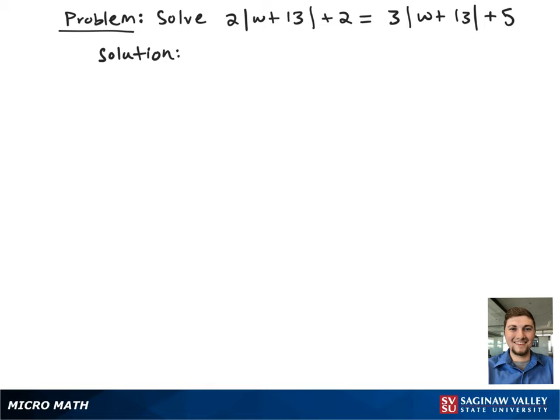Here we have the absolute value equation 2 times the absolute value of w plus 13 plus 2 equals 3 times the absolute value of w plus 13 plus 5.